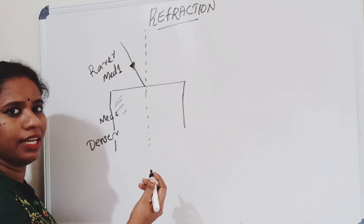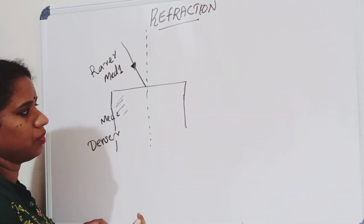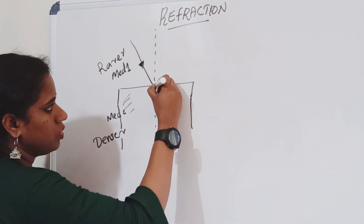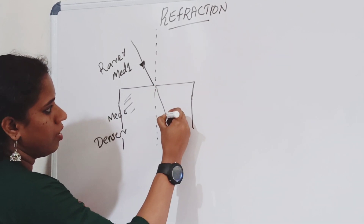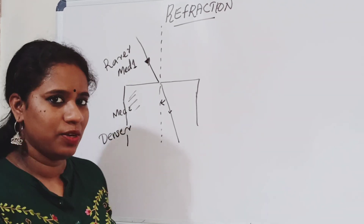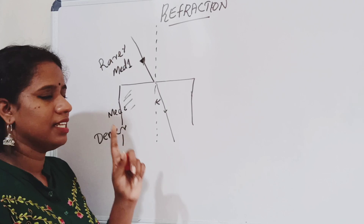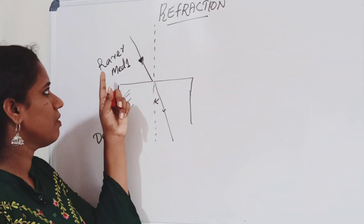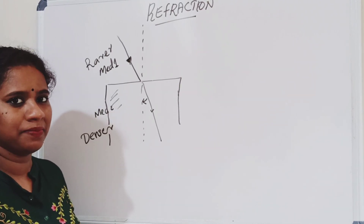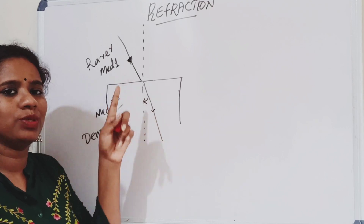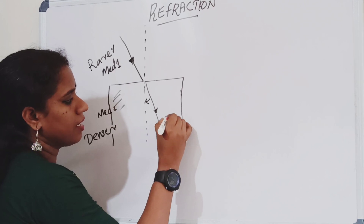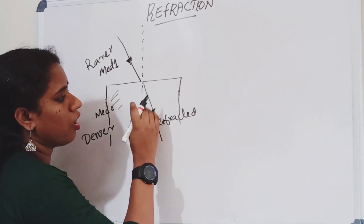When light undergoes refraction, the direction of light will bend towards the normal. That is the condition when a light ray passes from a rarer medium to a denser medium. The refracted ray bends towards the normal.